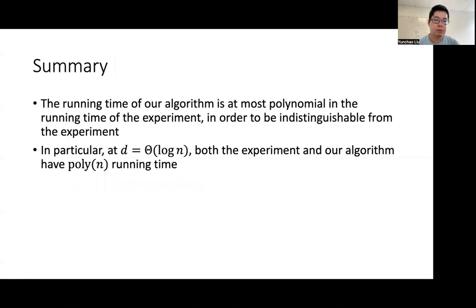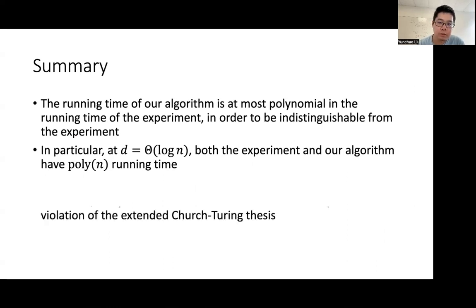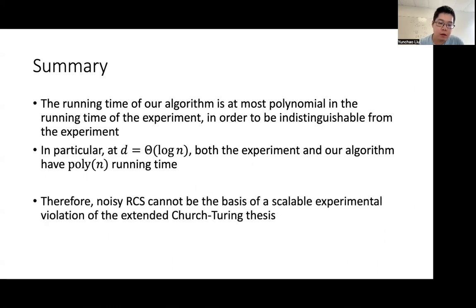So here is the summary of the results. The running time of our algorithm is at most polynomial in the running time of the experiment in order to be indistinguishable from the experiments. In particular, at Θ(log n) depths, both the experiment and our algorithm have polynomial running time. Based on these conclusions, we conclude that noisy random circuit sampling cannot be the basis of a scalable experimental violation of the extended Church-Turing thesis.